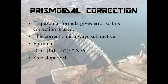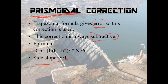Prismoidal correction: the trapezoidal formula gives an error while computing the volume, so this correction is used. Most importantly, the correction is always subtractive. The formula for the correction is given here, and one more thing — the side slope is always represented as SS to 1.